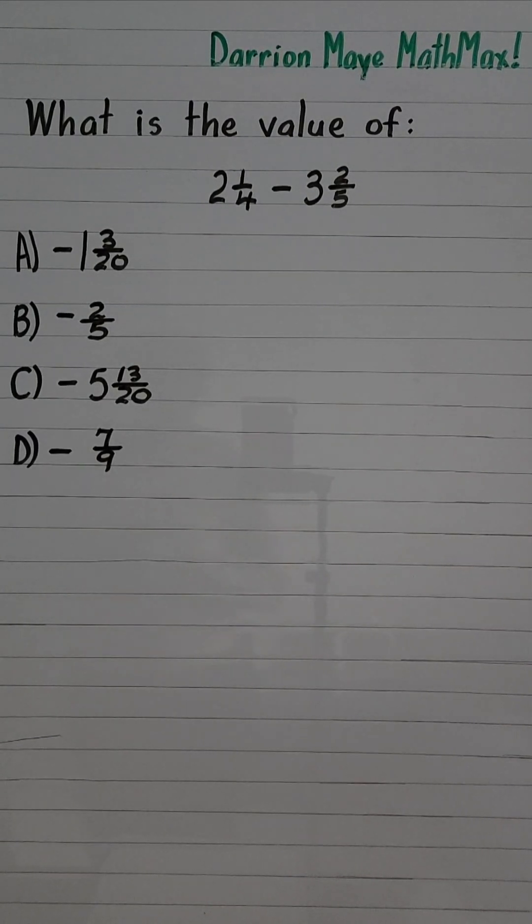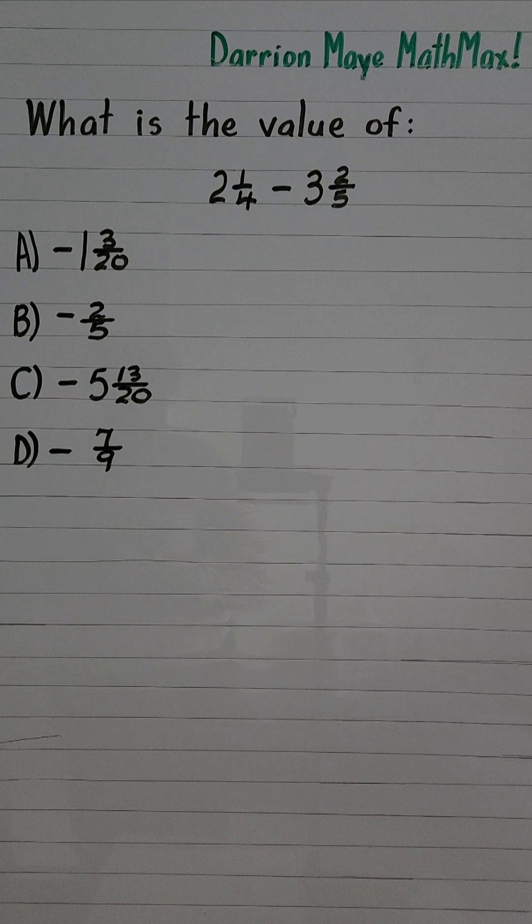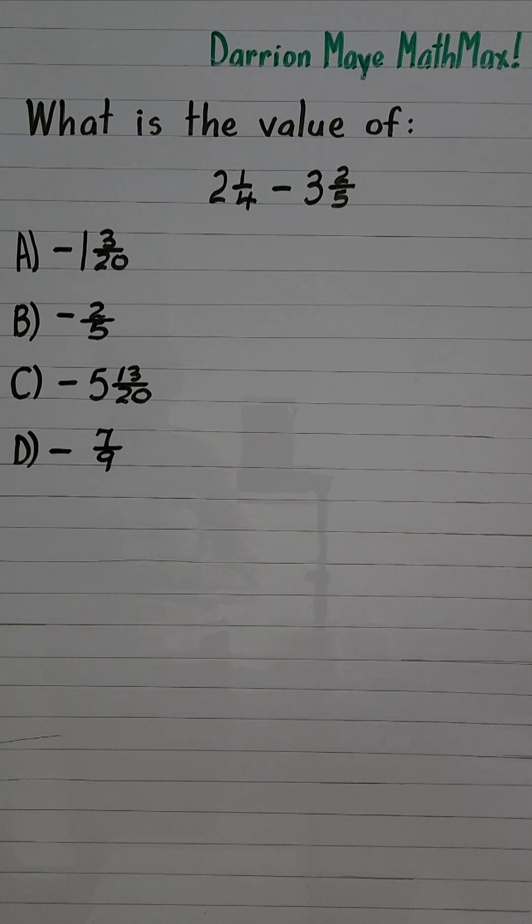What is the value of 2 and a quarter minus 3 and 2 fifths? Let's change the mixed numbers to improper fractions.